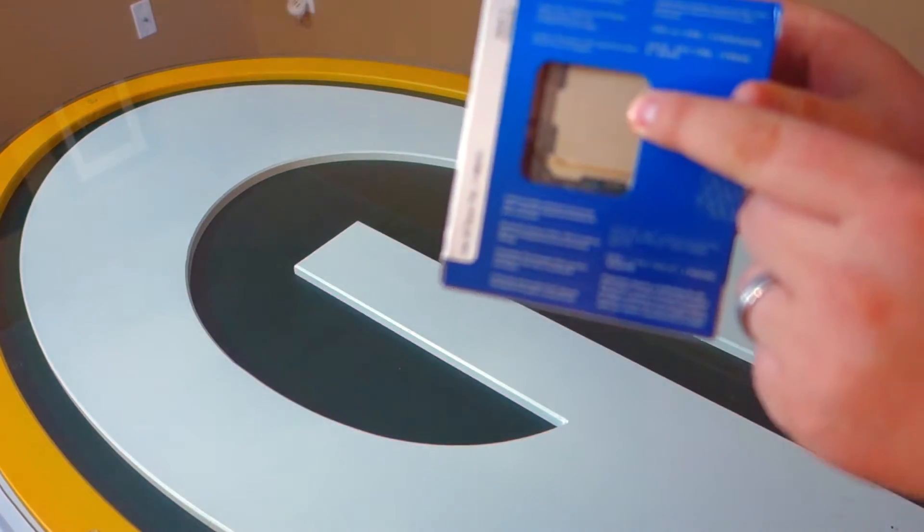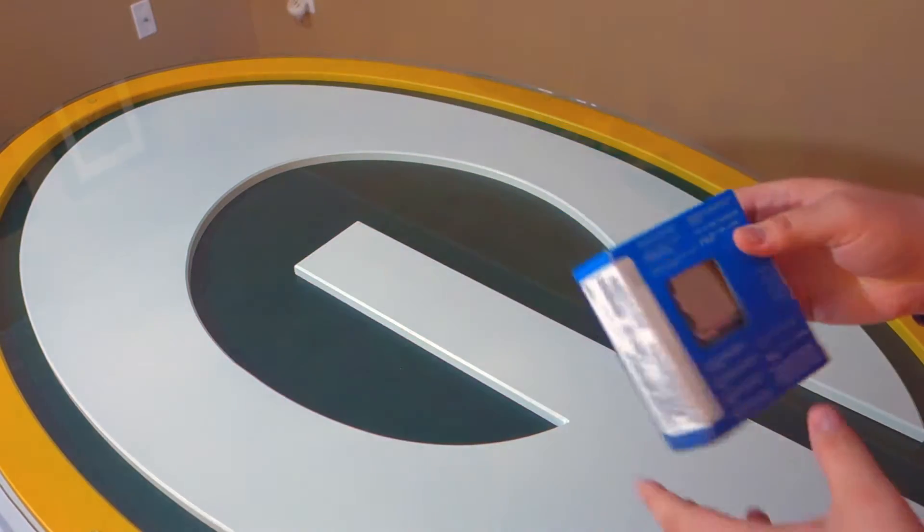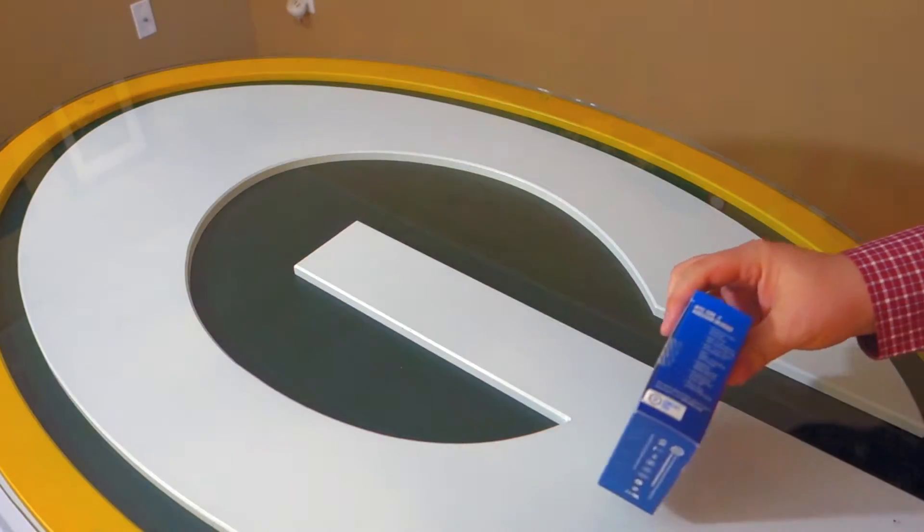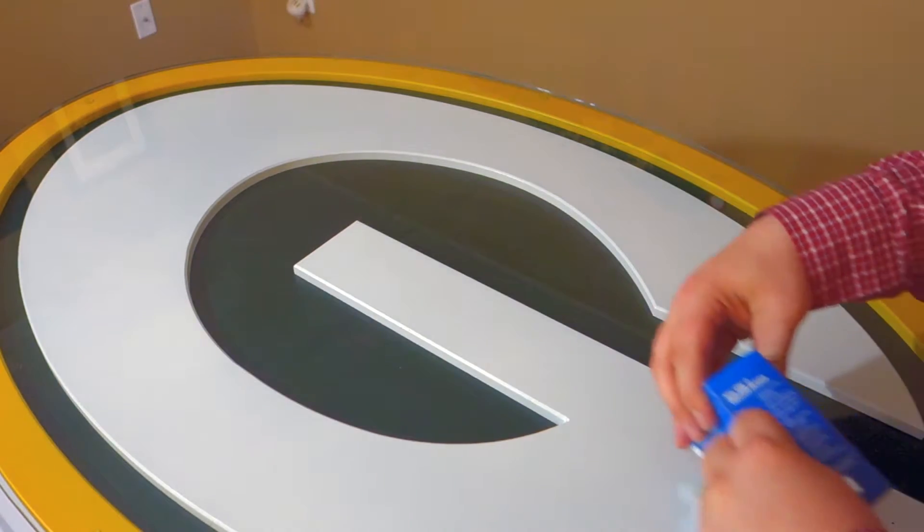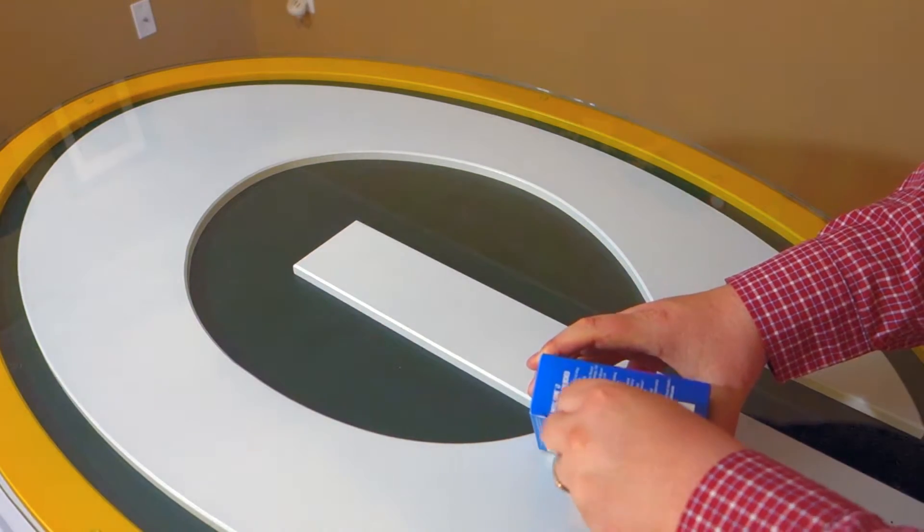so I thought I'd put it together for them. The 6900K is one of the new processors from Intel, from the Broadwell E line. This is an 8-core processor.